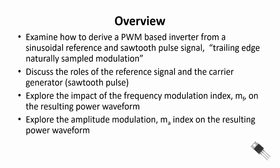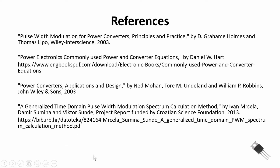We're going to discuss the roles of the reference signal and the carrier signal — also called the carrier generator — and for this example it's going to be our sawtooth pulse. Then we'll explore the impact of the frequency modulation index M sub f on the resulting power waveform, and explore the amplitude modulation index M sub a. We'll see that increasing M sub f will smooth out our current waveform.